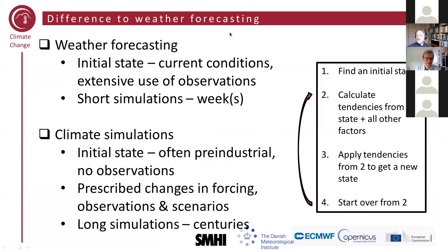The difference between weather forecasting and climate simulations is that it's basically the same kind of model, but we are asking very different questions. In weather forecasting, you want to predict the state some days into the future, and therefore the most important thing is to know the initial state of the atmosphere. In climate simulations, we don't want the initial state to have any influence — we look at statistics of very long simulations: weather statistics, not when, but how much. When we make much longer runs, we can only do it with a coarser resolution than weather forecasting does.